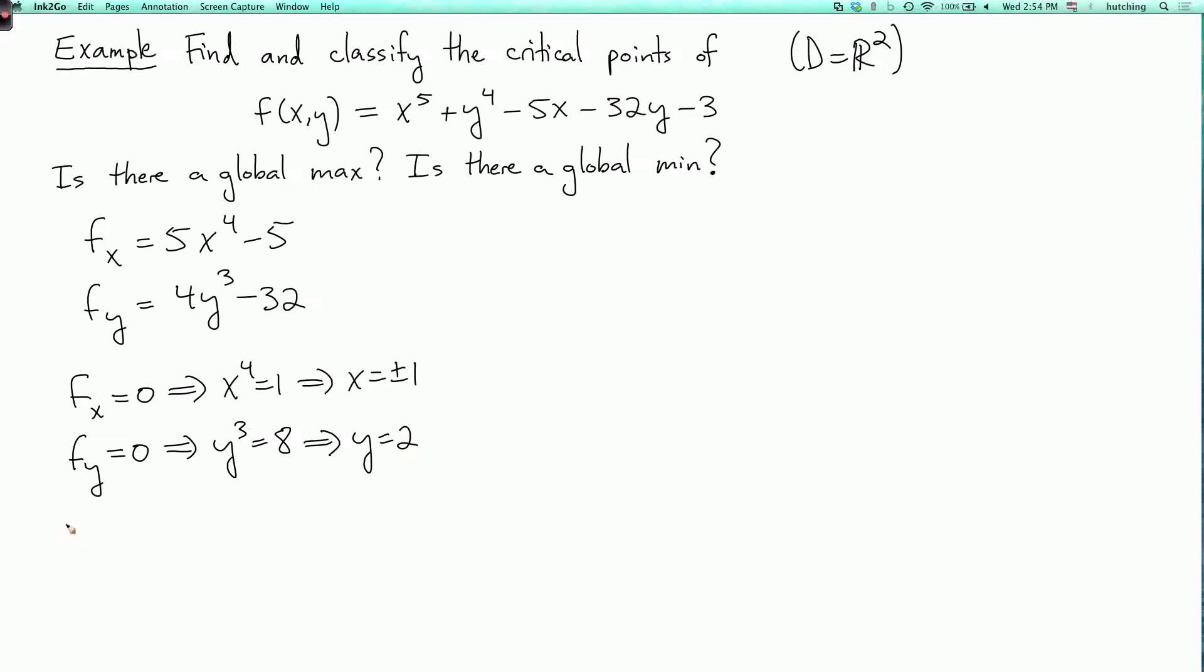So now there are two critical points: 1 comma 2 and minus 1 comma 2.